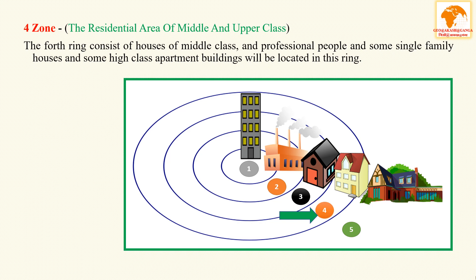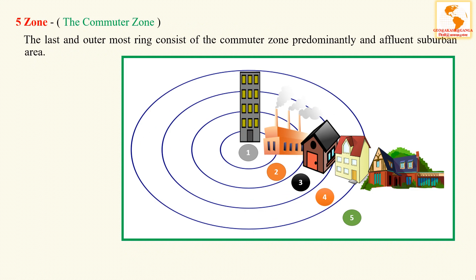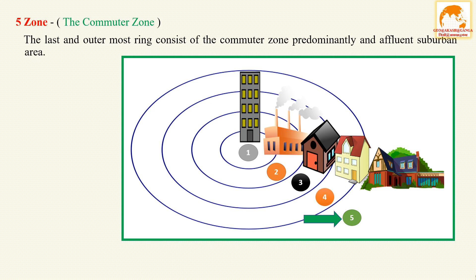The last and outermost ring is the commuter zone, which is predominantly an affluent suburban area. It represents higher-quality housing linked with longer commuting costs — mainly high-class and expensive housing in a rural suburbanized setting.